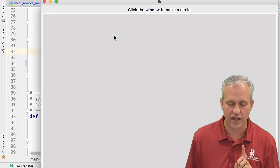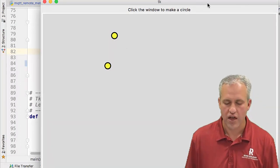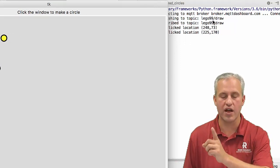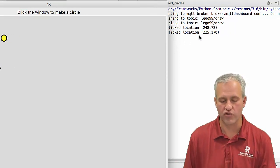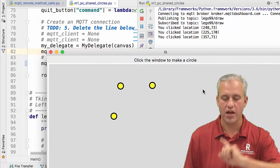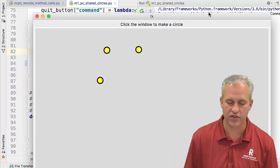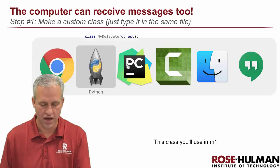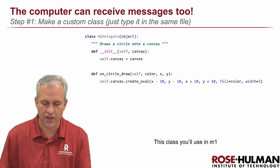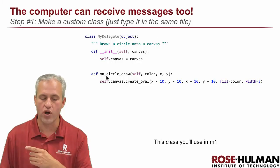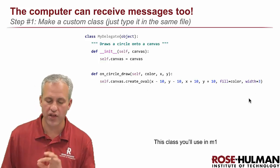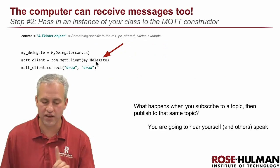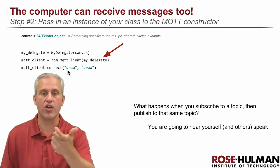This program lets you click and make circles. Just like the other examples, it's sending to a server — publishing to topic Lego 999 slash draw, and also listening to Lego 999 slash draw. It passes where you're clicking, gets the message back, and sets a color. There's a delegate that receives the canvas, and whenever it receives a message on circle draw, it places a circle there. The MQTT client was set up as the delegate, connecting, publishing to draw, and listening to draw — so you hear yourself.